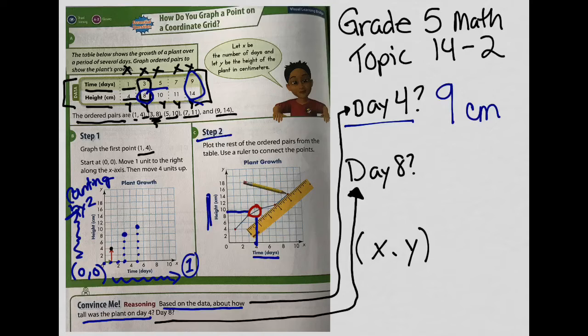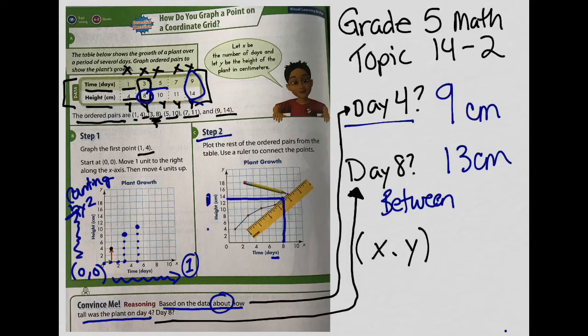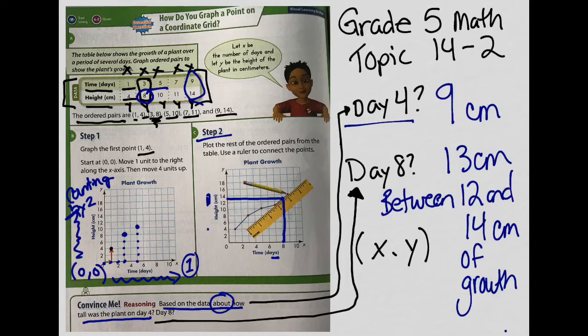Let's see what day 8 is. I do the same thing. I'm going to look for day 8. So now I have to follow day 8 up until I have a point where they meet on this graph. So now I'm coming over here. So once again, that's in the middle. So it can be either 13 centimeters because it does say about. So it is about 13 centimeters or what you could say is day 8 is between 12 and 14 centimeters of growth. So that's the height of the plant. Alright, so those are plotting points and us reading the coordinate grids.